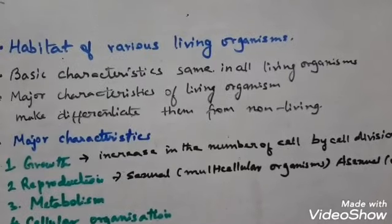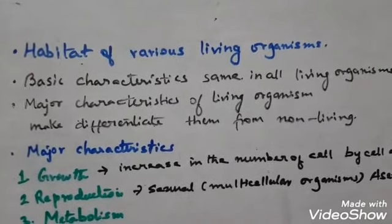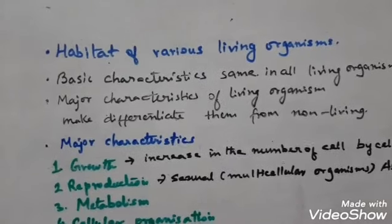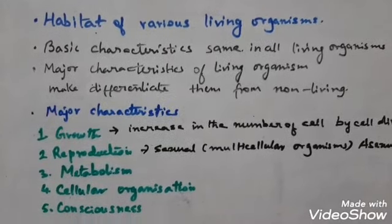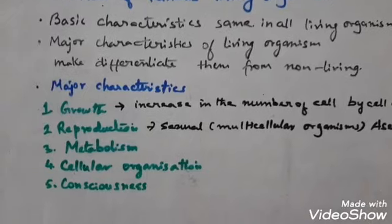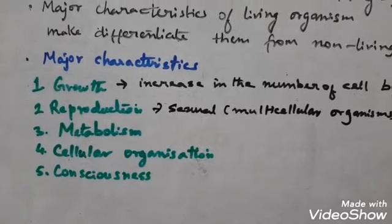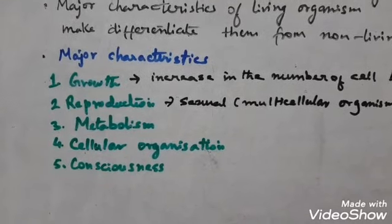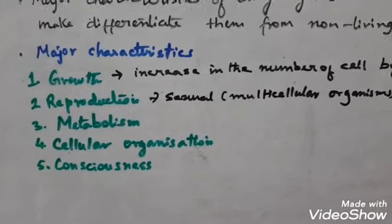What are these major basic characteristics of living organisms? These basic characteristics differentiate a living organism from a non-living object. How can you say that an object lying on the road is living or non-living? For that we study the major basic characteristics. These are: growth, reproduction, metabolism, cellular organization, and consciousness. These five basic characteristics define an object as living.